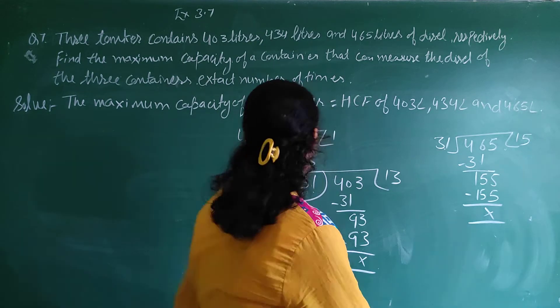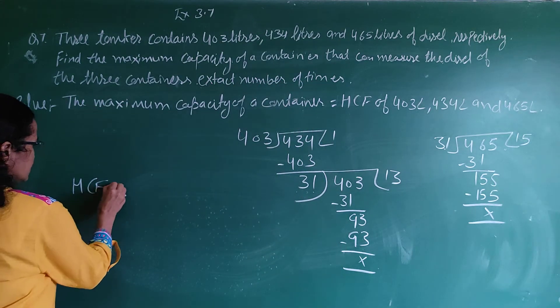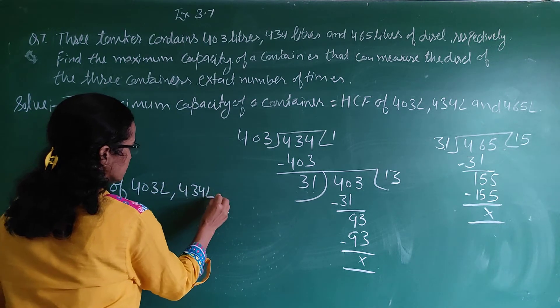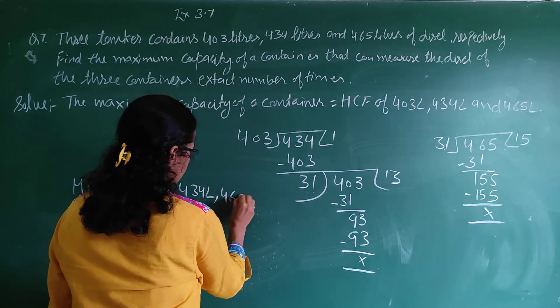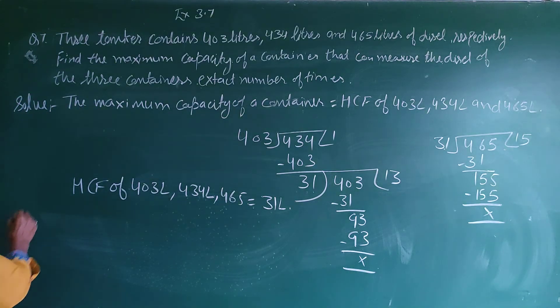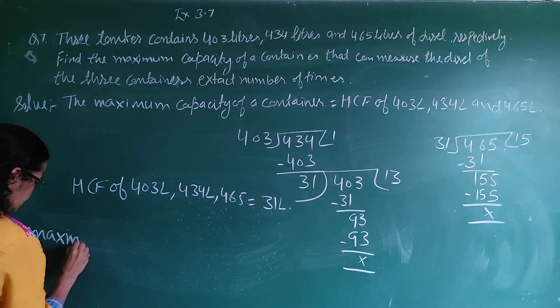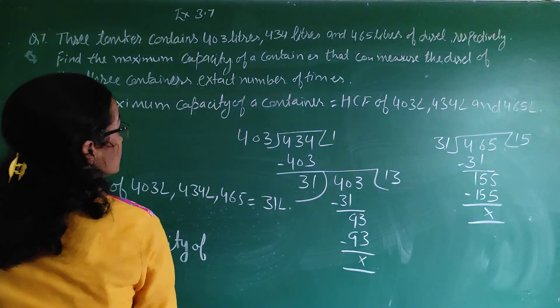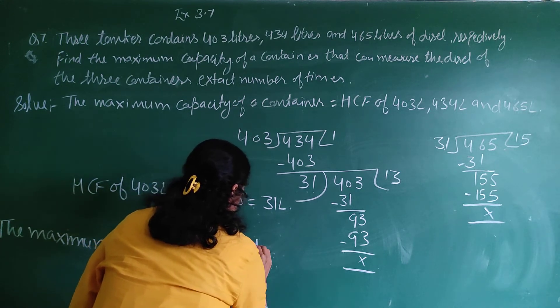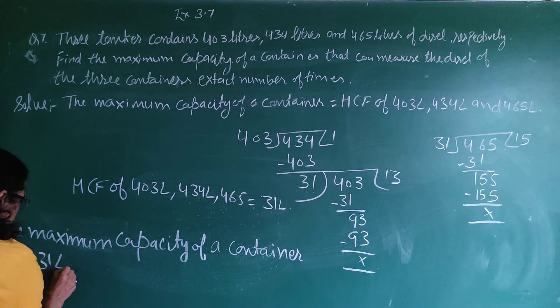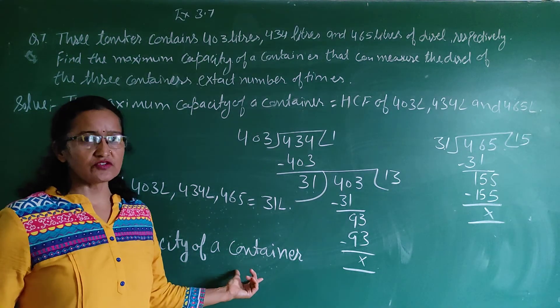403 liter, 434 liter and 465 liter, that is equal to 31 liter. This means that the maximum capacity of a container is 31 liter. 31 liter is the maximum capacity, which is the HCF.